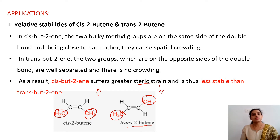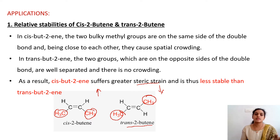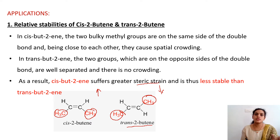Therefore, the stability will be greater in the case of trans-2-butene because there is less steric crowding, and stability will be lesser for cis-2-butene because in the cis position the bulkier groups are closer to each other. Therefore, steric hindrance increases and stability decreases.